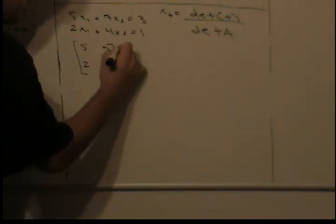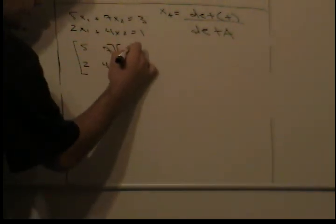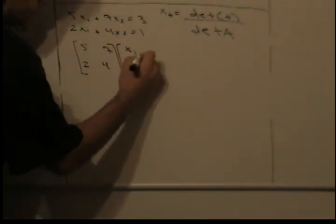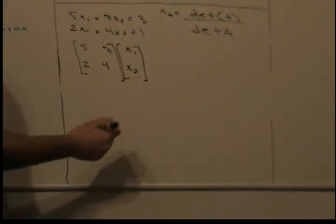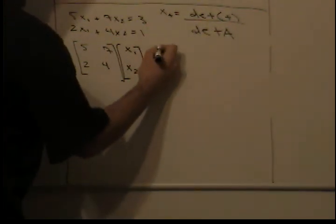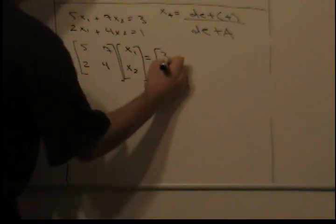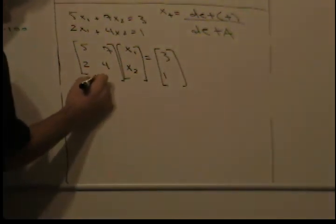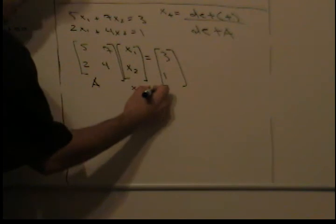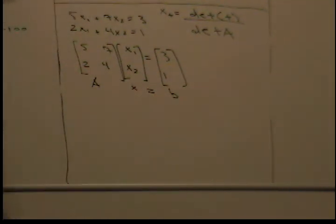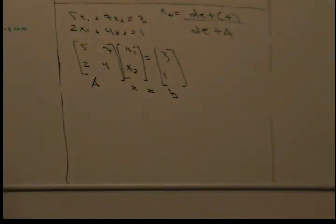Okay, so what we have to do to solve for x1 and x2 is we take the column 3, 1 and we put it over here. So we replace this. This is the x1 column, this is the x2 column, right?